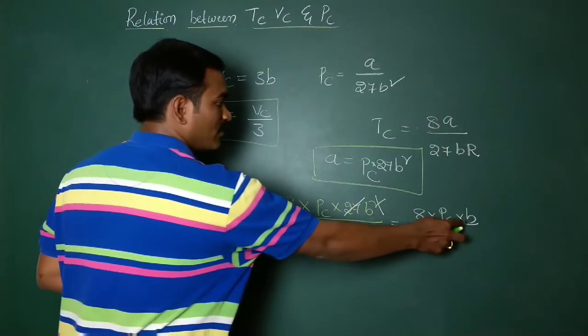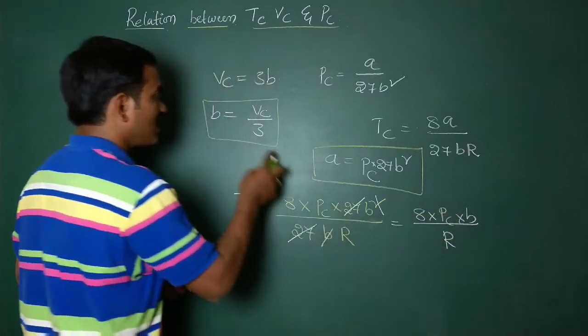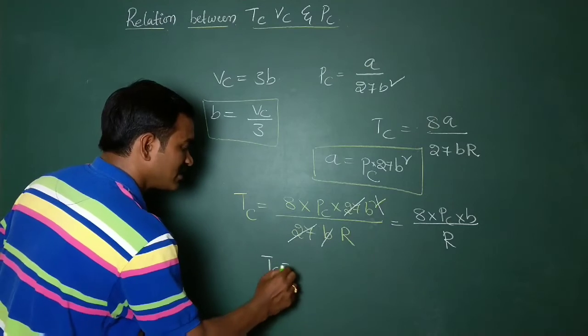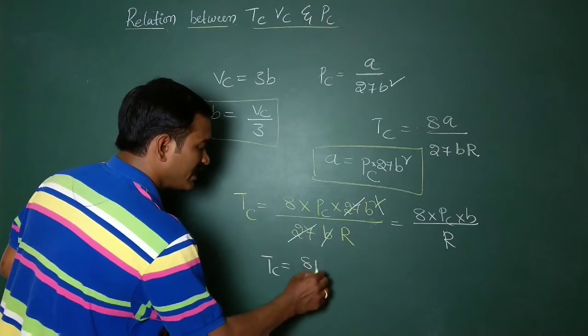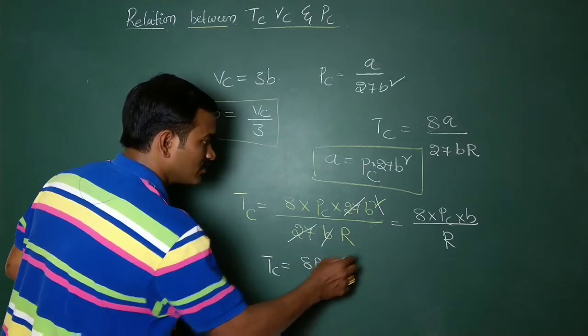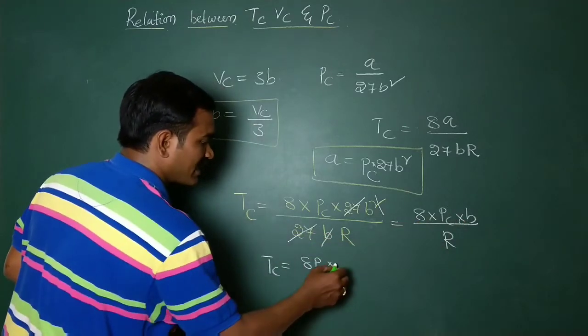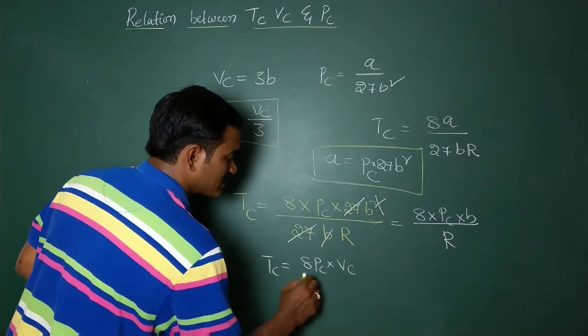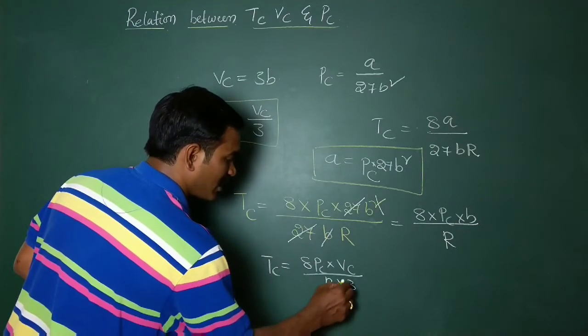Now you know very well, B equals what? Vc by 3. Have you got it? Now here you see that, Tc equals 8Pc into... here B equals what? We can write it as Vc by 3, so therefore Vc by 3 into R. Now what we are doing here? Simply, I am sending this R into 3 this side.